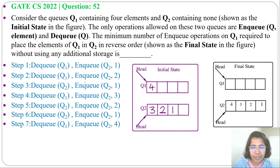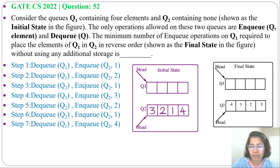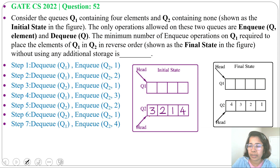After NQ of 4 at Q2, we get Q2 containing 3, 2, 1, 4. But it should be 4, 3, 2, 1. So we need further operations on Q2.